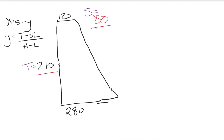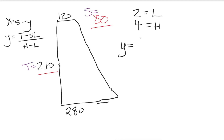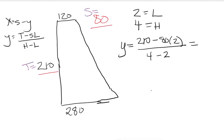With T equals 210 and S equals 80, and wanting increases on right side rows, we'll work every second row and every fourth row. So H equals 4 and L equals 2. Plugging into the Y equation: Y equals (210 minus 80 times 2) divided by (4 minus 2), which equals (210 minus 160) divided by 2, which equals 50 divided by 2. Y equals 25.